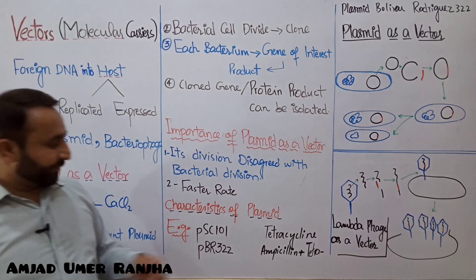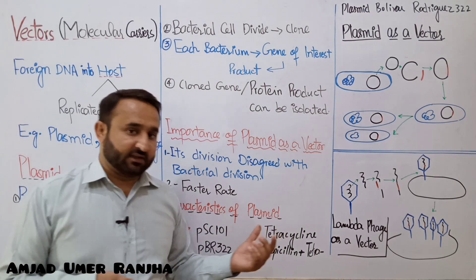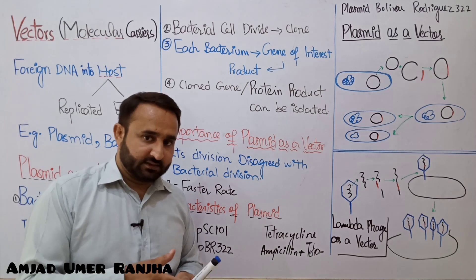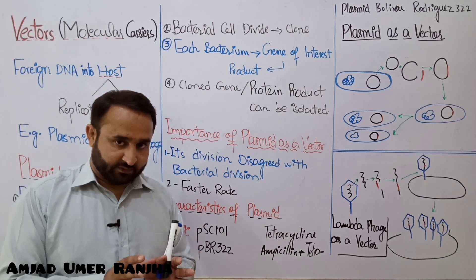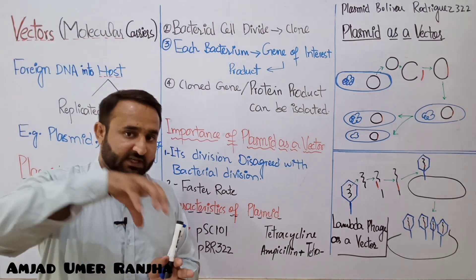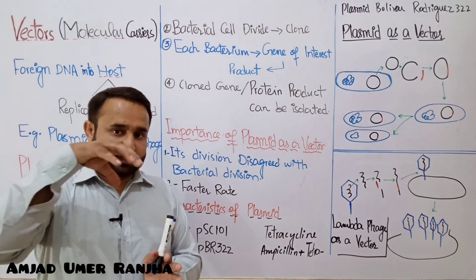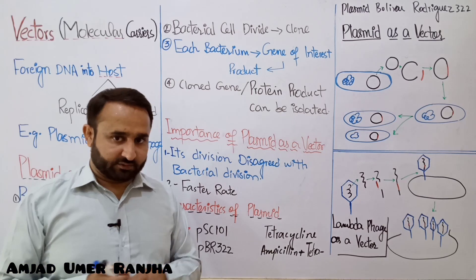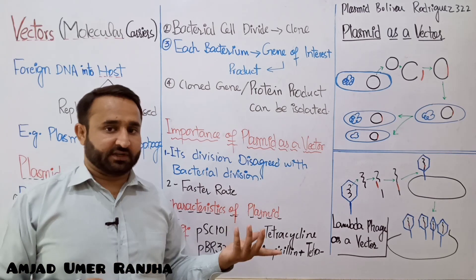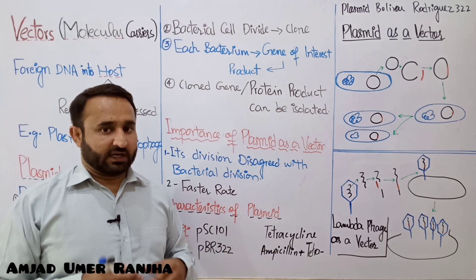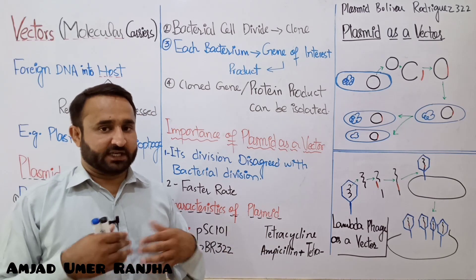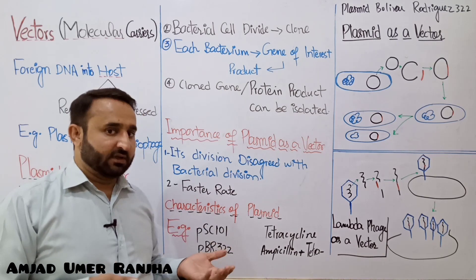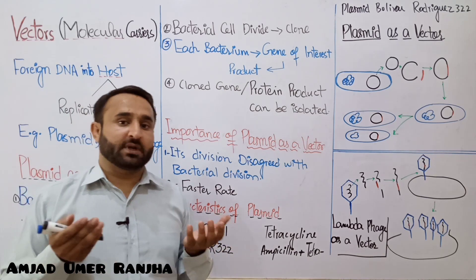To differentiate them, add recombinant pSC101 — with the foreign gene of interest inserted — into bacteria, then treat with tetracycline. If those bacteria die, it means pSC101 was not successfully incorporated inside them.